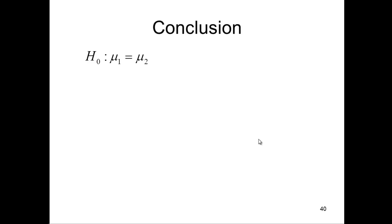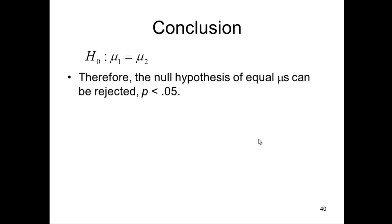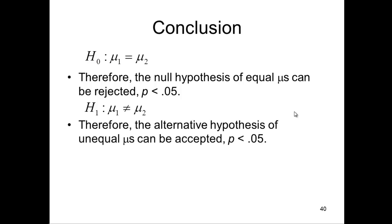Conclusions. With respect to the null hypothesis, do smokers and non-smokers have equal brain volumes? No, they do not. The null hypothesis of equal μs, that means in the population, can be rejected, p < 0.05. The alternative hypothesis, which is stating that the μs are unequal, can be accepted, p < 0.05. Therefore, the alternative hypothesis of unequal μs, unequal brain volumes in the population, can be accepted.